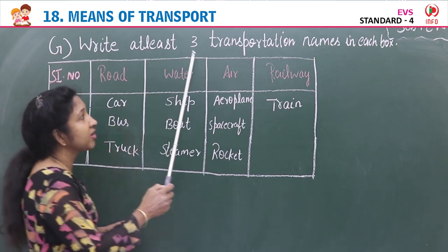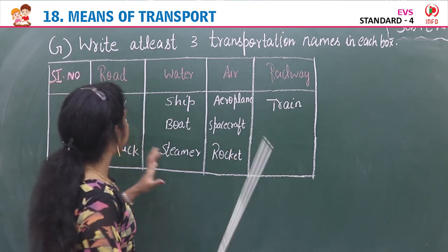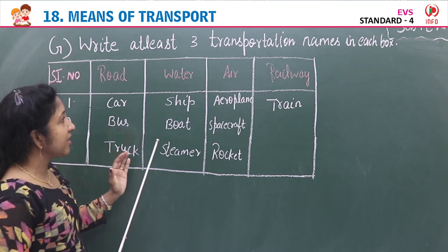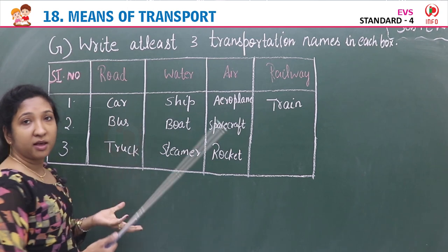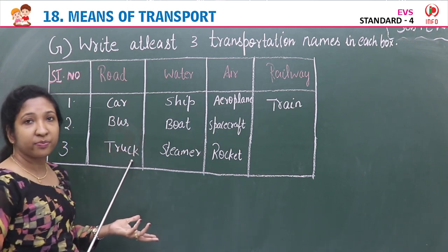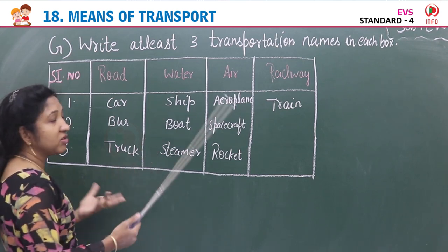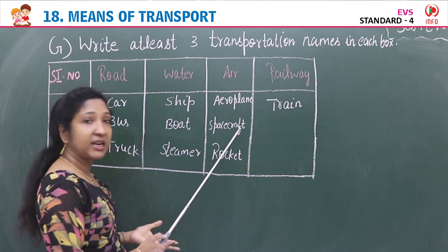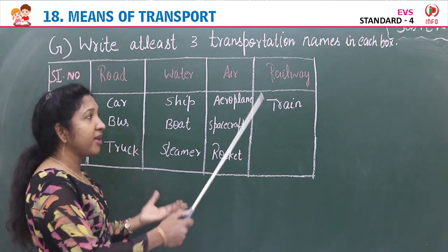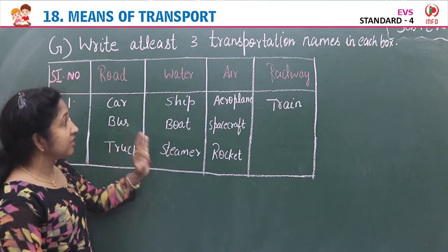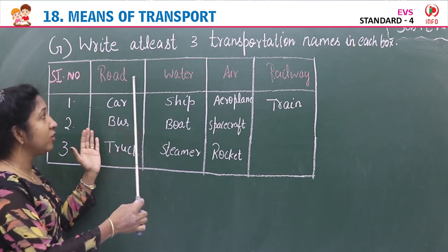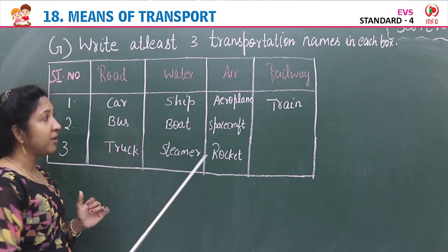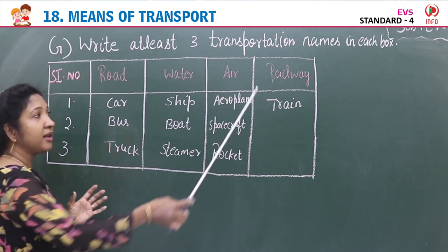Exercise G: Write at least three transportation names in each box. The headings are road, water, air, and railway. Under road: car, bus, truck. Under water: ship, boat, steamer. Under air: aeroplane, spacecraft, rocket. Under railway: train. Write three transportation names under each category.